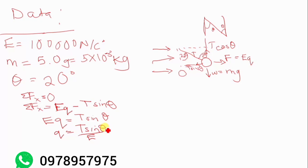So now here we have got theta, we have got E, but what we don't have is T. So we're going to go now in the y direction. So summation of forces in the y direction is equal to zero because it's hanging, there's no motion.